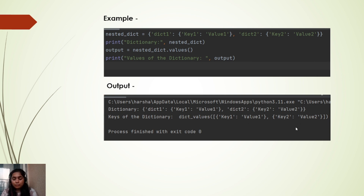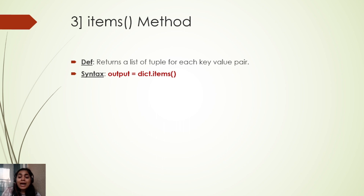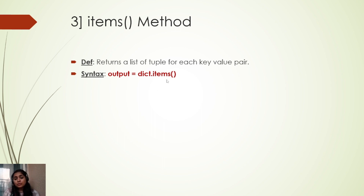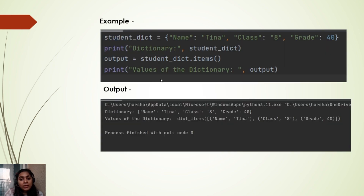The third method is the items method. Each key-value pair in a dictionary is called an item. When we use the items method, it is going to return tuples of each key-value pair. The syntax is: dictionary.items().